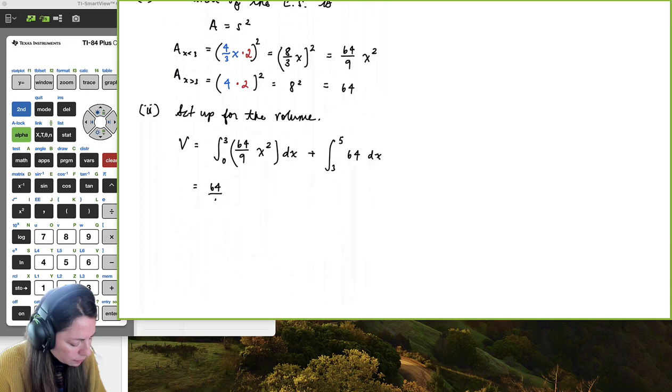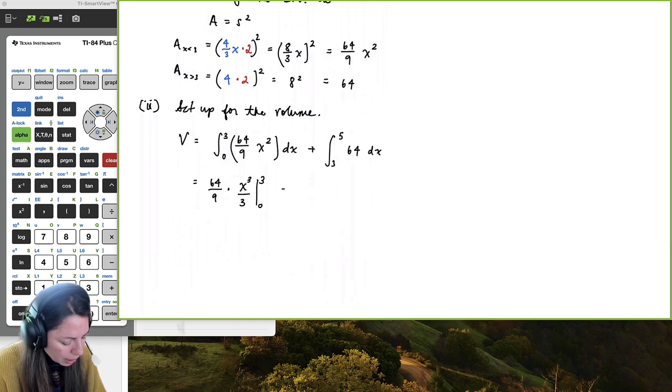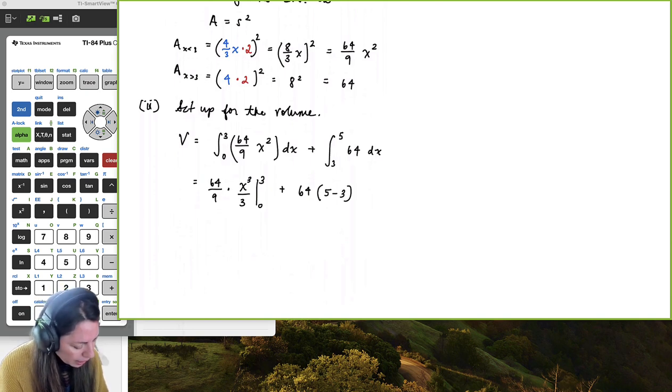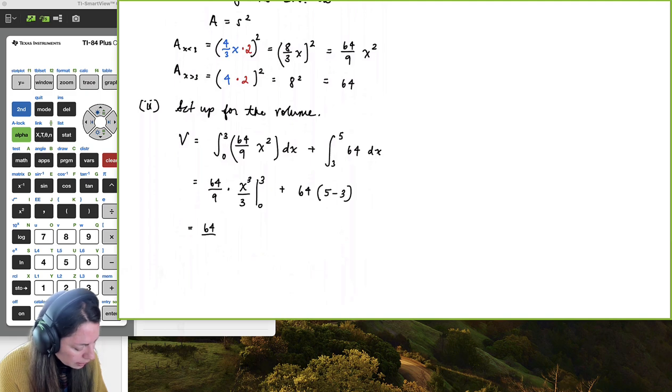We'll get 64 ninths from the constant multiple rule. The antiderivative of x squared is just going to be x cubed over 3 evaluated from 0 to 3 plus 64 on the outside constant multiple rule. And then we get 5 minus 3. And that's just a property of integrals back from chapter 5. And so here I'm going to go ahead and kick this 3 out here. So here we're going to have 64 27ths times 3 cubed minus 0 cubed plus 64 times 2 which is 128.